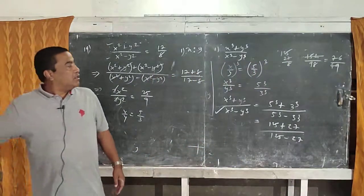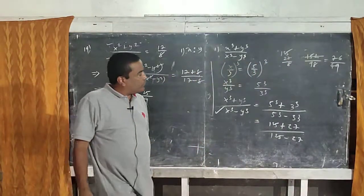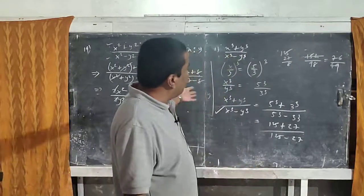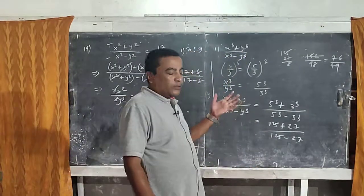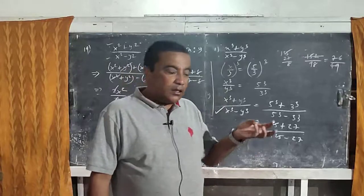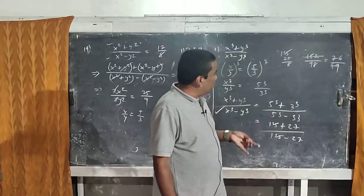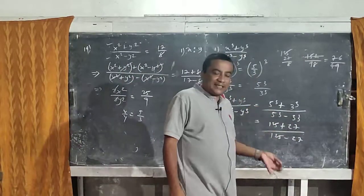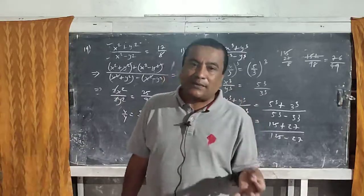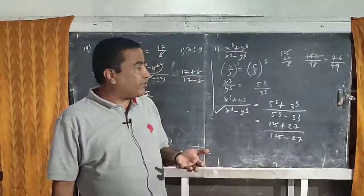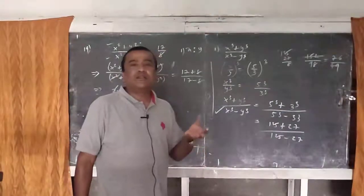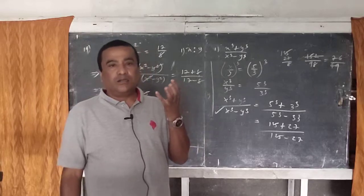With this we have finished ratio and proportion entirely — componendo and dividendo is complete. We have also finished arithmetic, algebra, trigonometry, and statistics. The last remaining chapter is geometry.